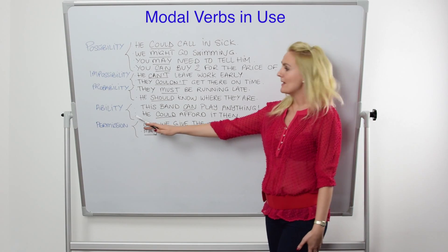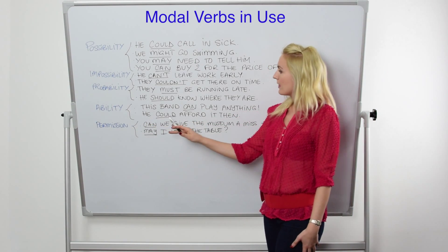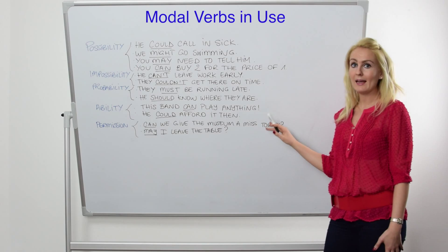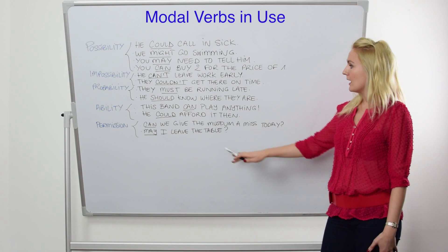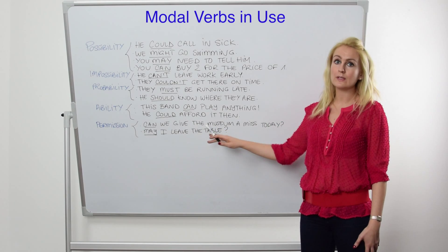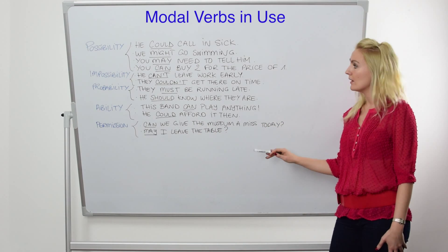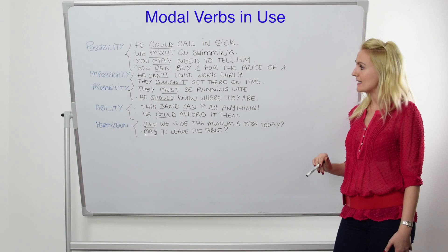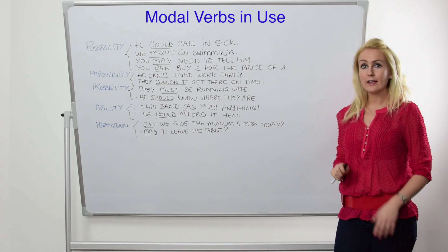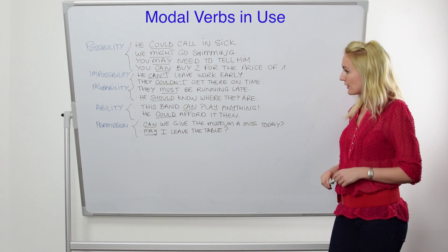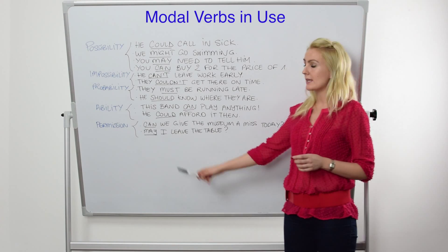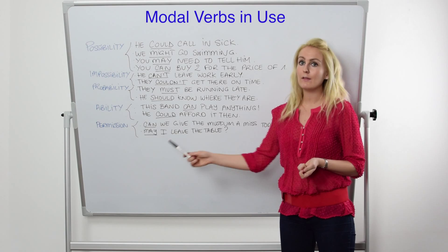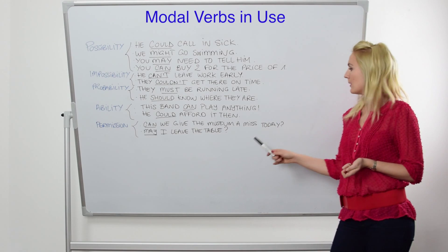Expressing ability — we use can and could. For example: This band can play anything. He could afford it then. And finally, for permission, we can use can or may.